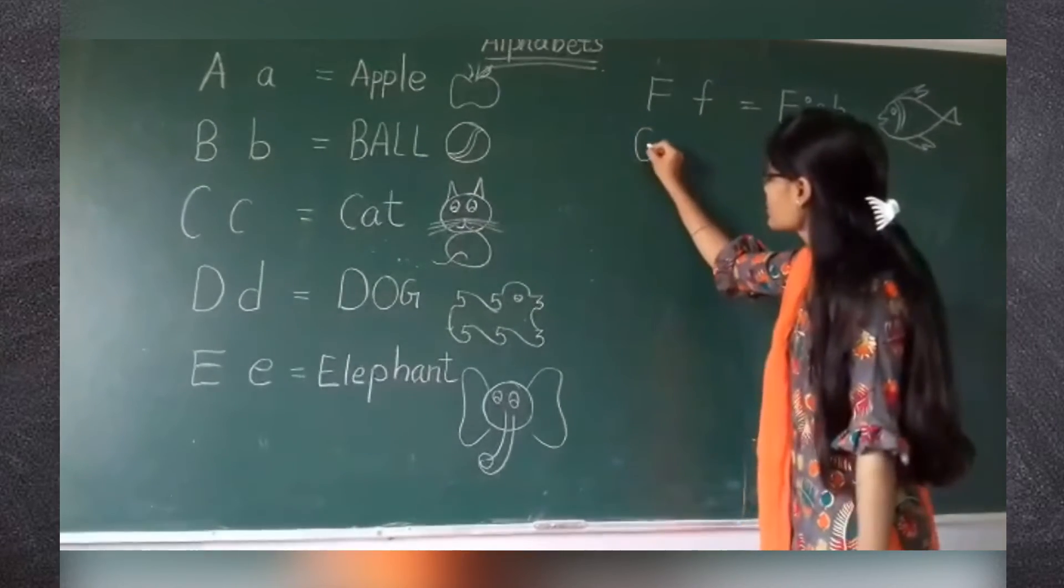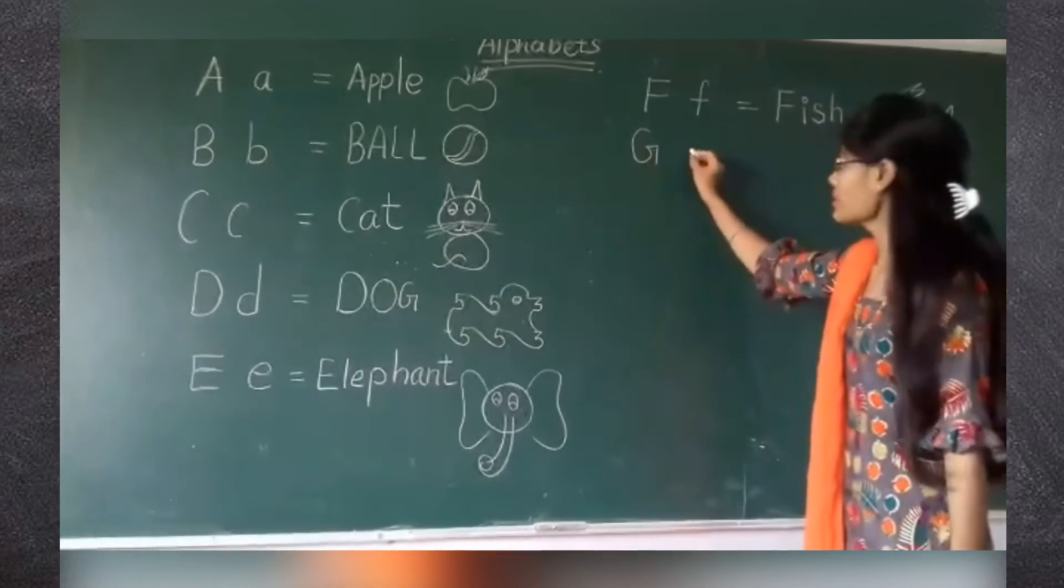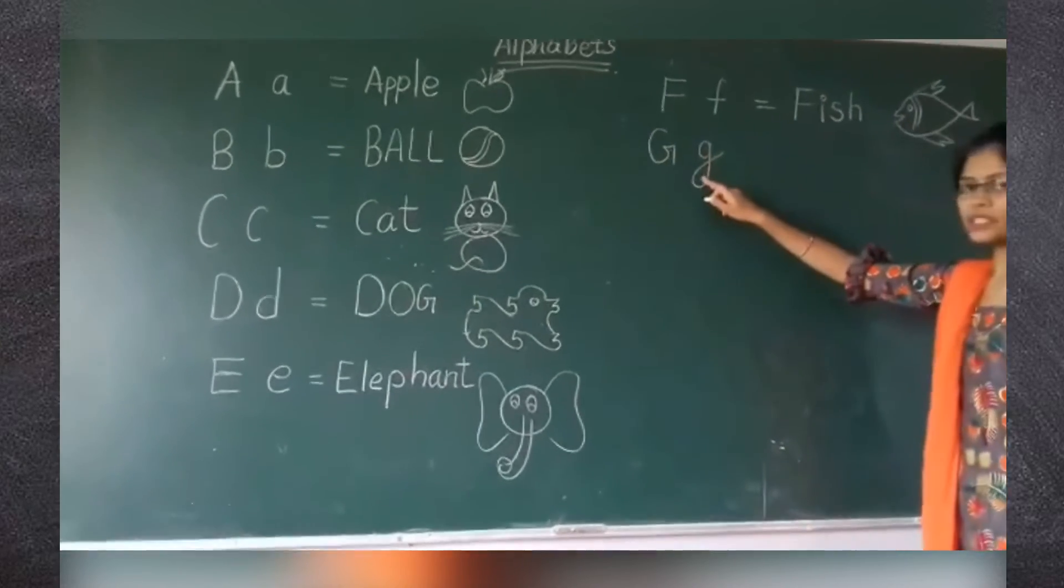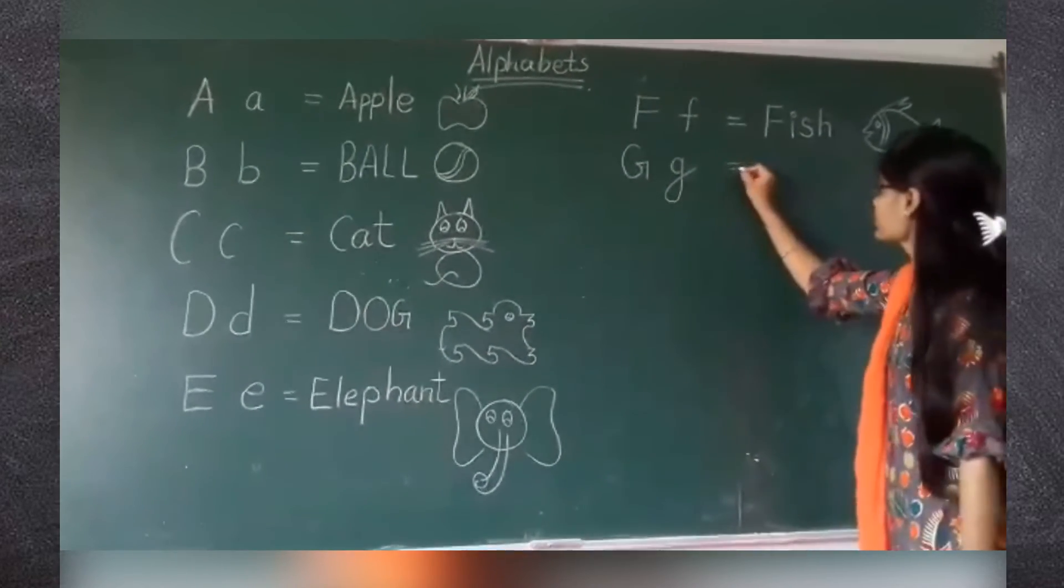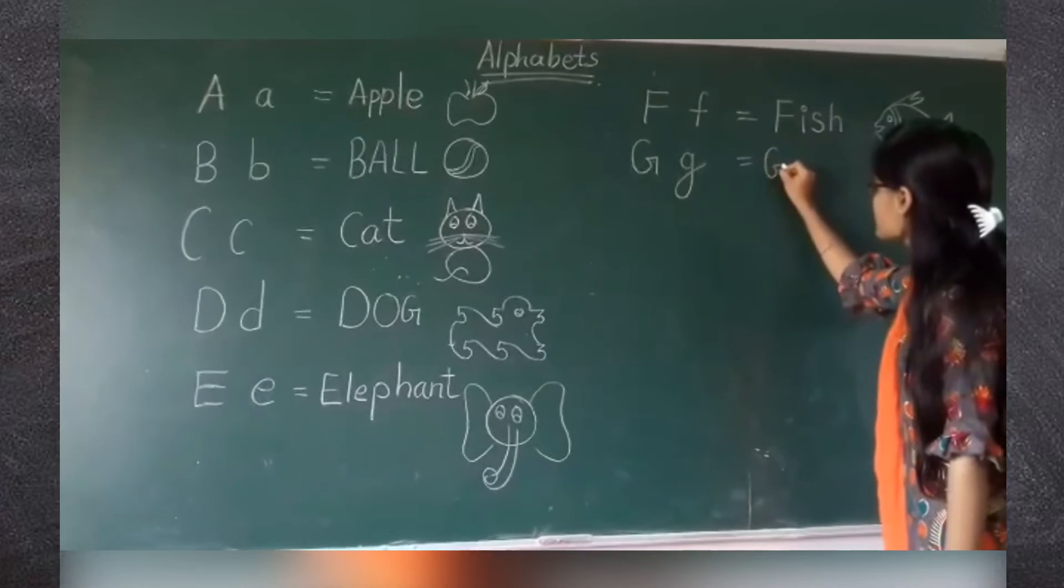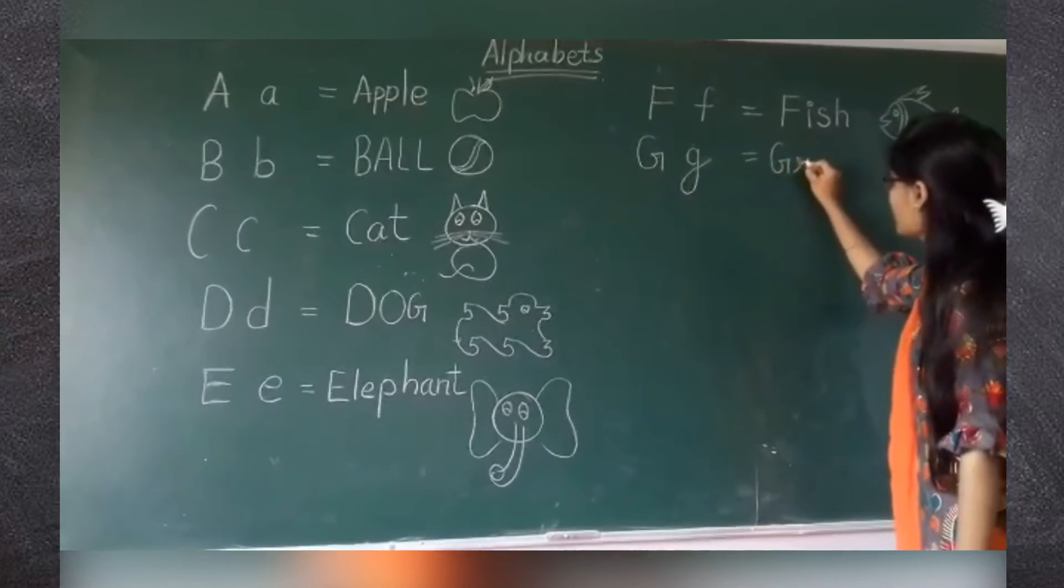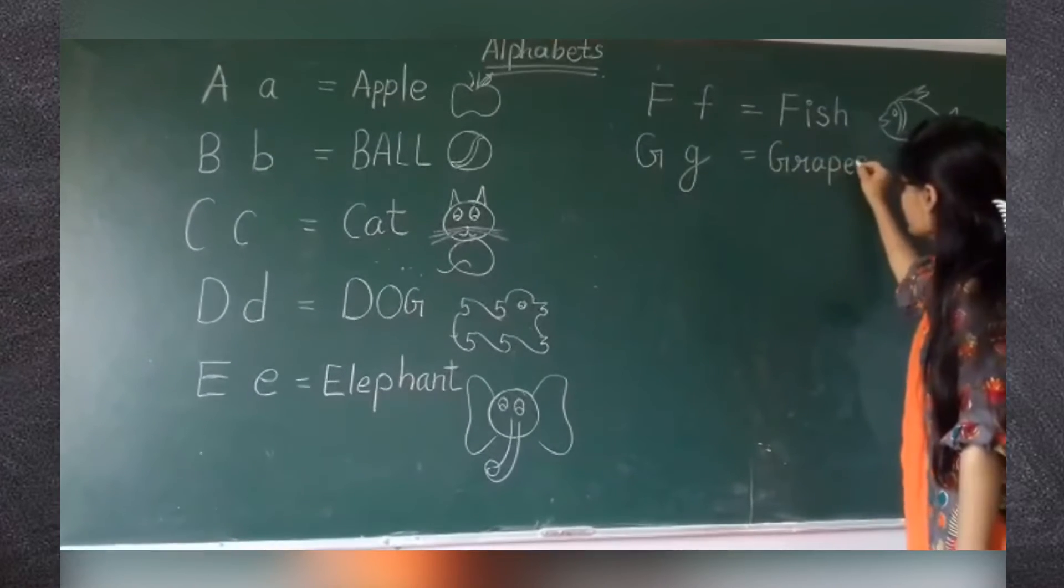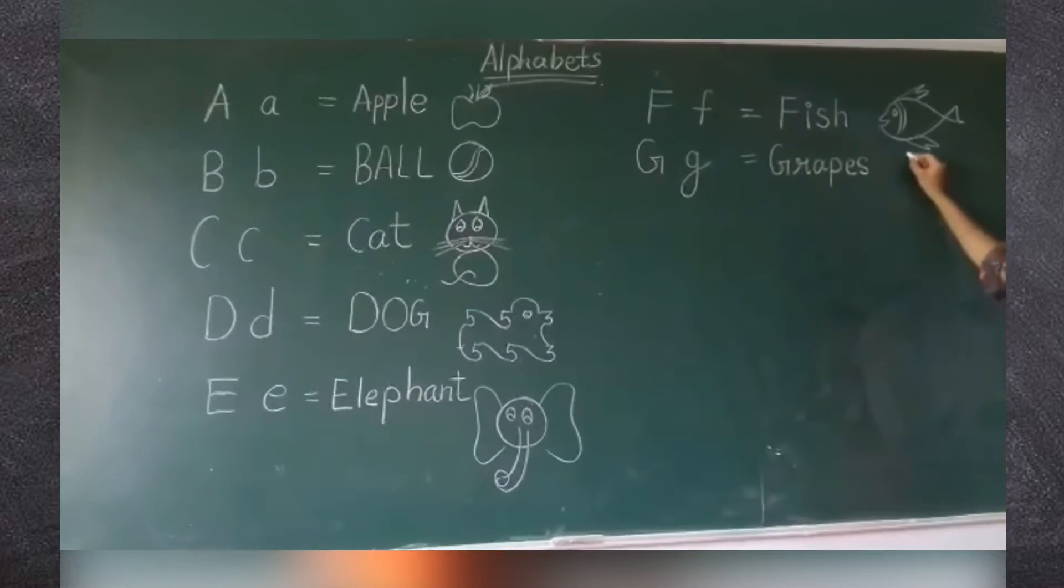Next letter is G. G for grapes. Capital G and this is small g. Spelling of grapes is G-R-A-P-E-S. Grapes.